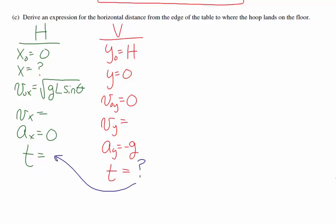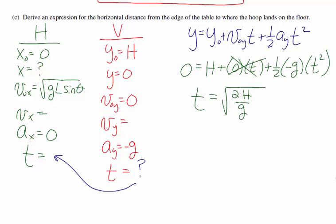To find the time to reach the ground, I use the kinematic equation relating position and time. I know all quantities except t, so substituting in and solving gives the time to reach the ground as the square root of 2H over g.